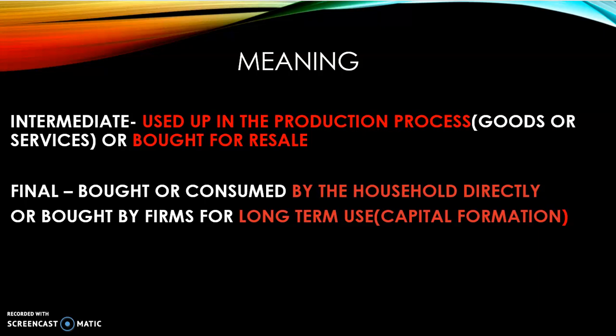The second way to identify intermediate goods: if any good is bought by a dealer, a retailer, or a wholesaler for resale, that is also intermediate. If we add it once with the wholesaler and then again with the retailer or consumer, it becomes double counting. So we don't add resale goods. To summarize: intermediate goods are either used up in the production process — like aluminium used for making aeroplanes — or bought for resale.